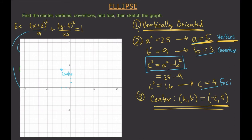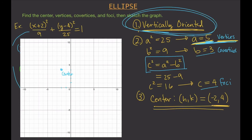Next, we plot the vertices, which are 5 units away from the center. Since our ellipse is vertically oriented, we count 5 units up and 5 units down from the center. Those are our vertices.